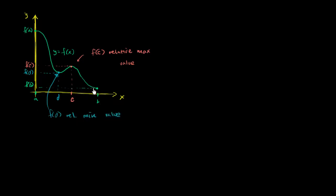Once again, over the whole interval there are definitely points that are lower, and we hit an absolute minimum for the interval at x equals b. But this is a relative minimum, or a local minimum, because it's lower than the surrounding values — if we look at the x values around d, the function at those values is higher than when we get to d. So you're at a relative maximum if you hit a larger value of your function than any of the surrounding values, and you're at a minimum if you're at a smaller value than any of the surrounding values.